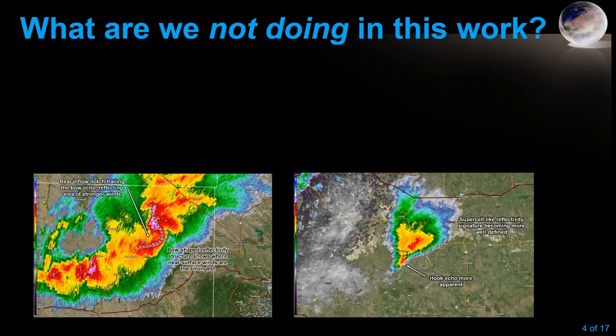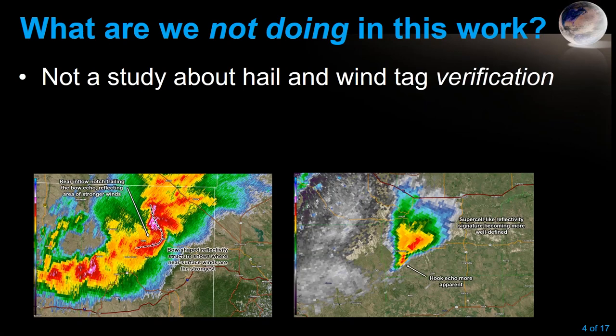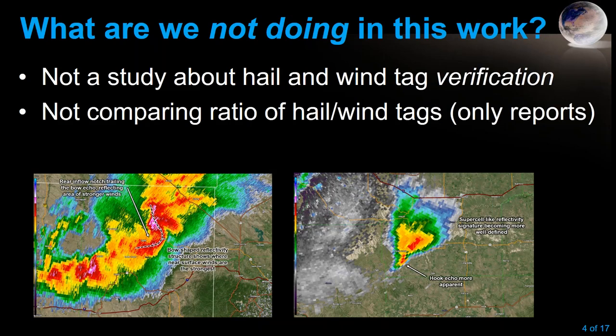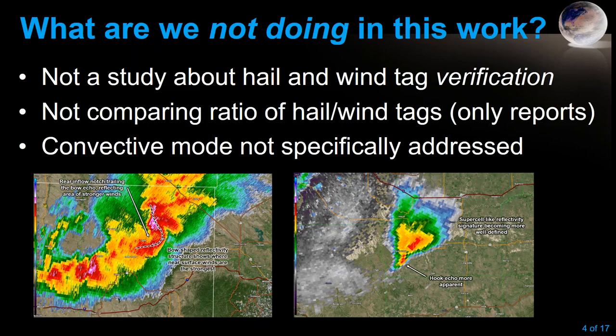So what are we not doing with this work? This isn't a study about the verification of hail and wind tags in warnings — we're not doing that at all. We're also not comparing the ratio of hail to wind tags; we're comparing the ratio of hail to wind reports only. And we did not specifically address convective modes, though we do look at convective mode in a broader sense to explain some of our results.